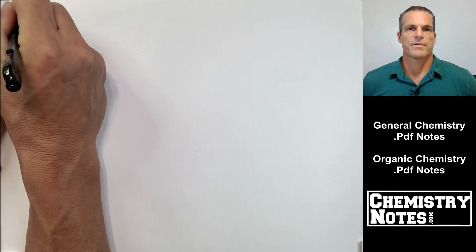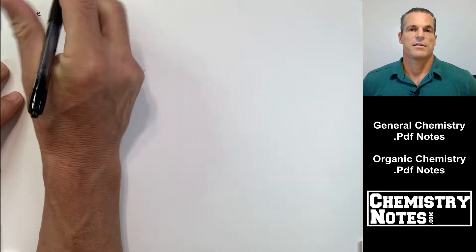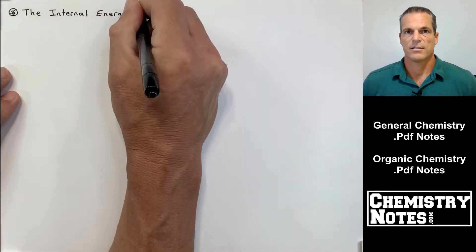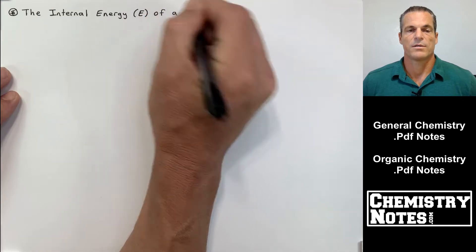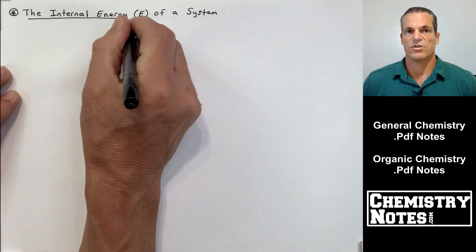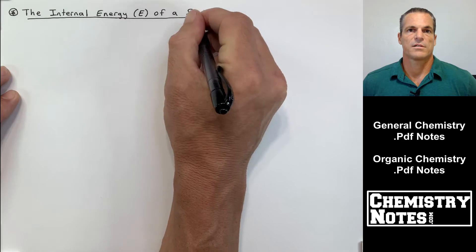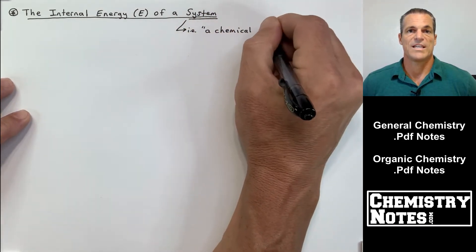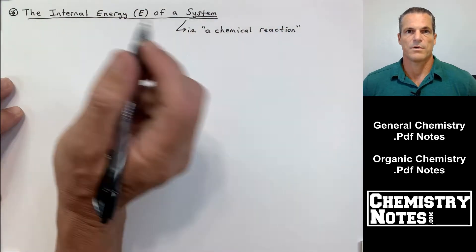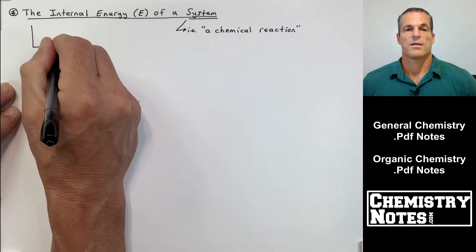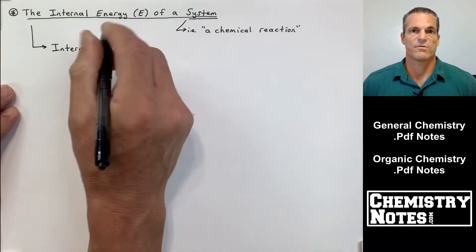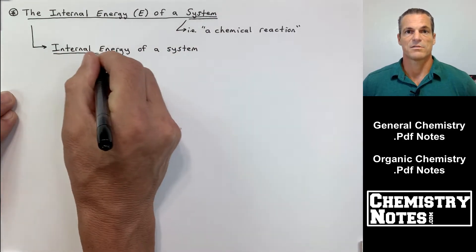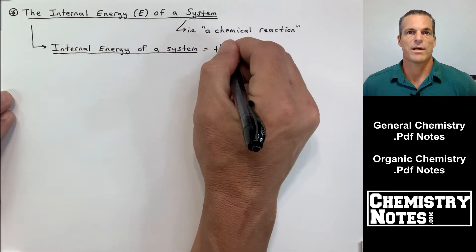Hi everybody, Justin here from chemistrynotes.com and today's video is the second video on section six — S6E2. Today's video is going to talk about the internal energy of a system and its relationship between heat Q and work W. We're going to talk about work, positive work and negative work, expansion and compression, and the point of view of the system and the surroundings. Let's get right to it.